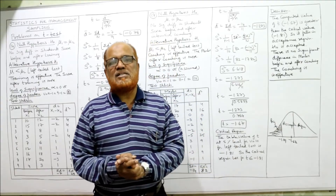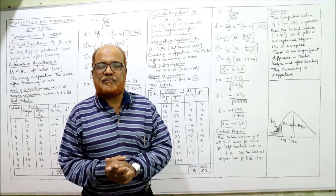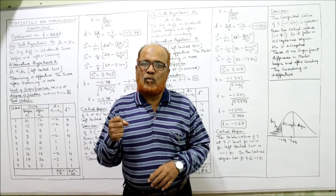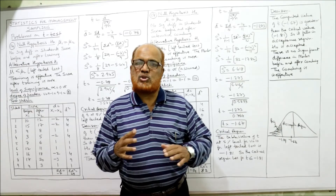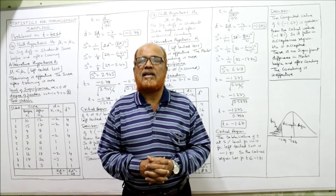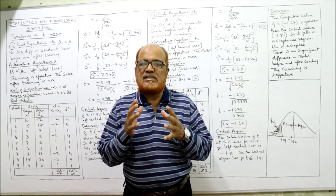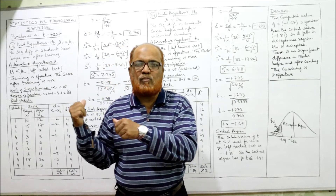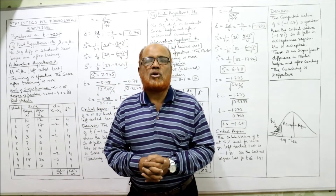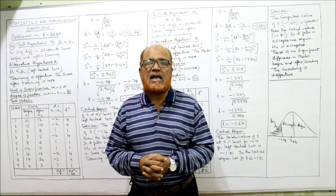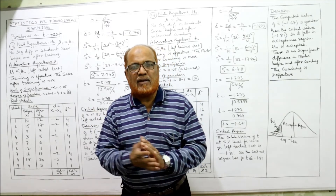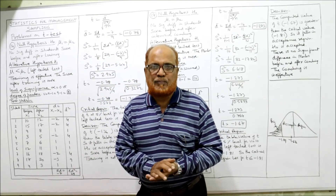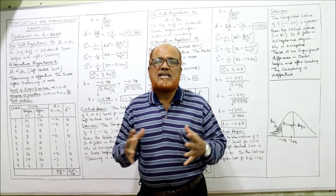This is the end of all 18 T-test problems. For perfect knowledge, watch all the videos not once but two or three times. In sampling I have completed the z-test (large sample test) and t-test (small sample test). Next I'll start ANOVA — Analysis of Variance — in the next video. If you are satisfied with my lecture, give a like and share my channel.